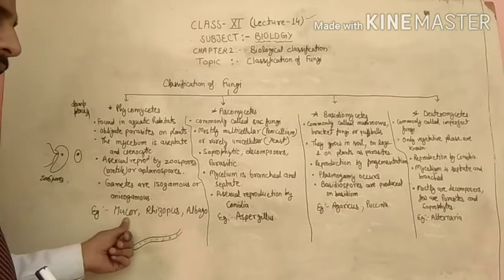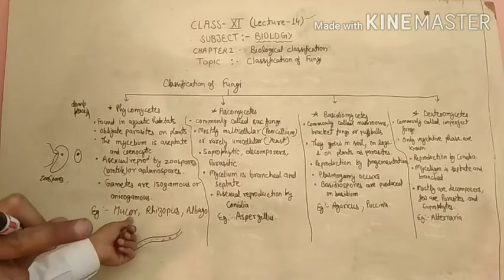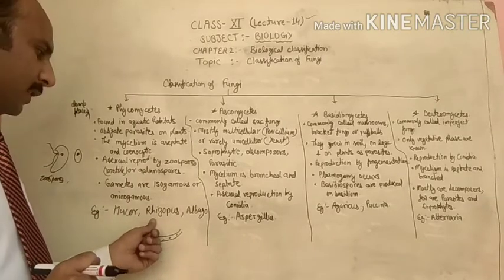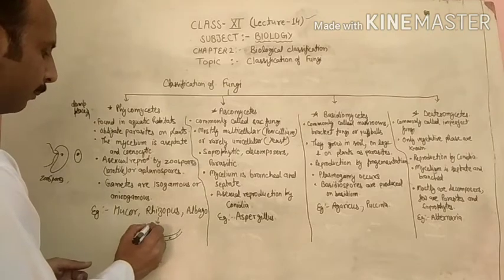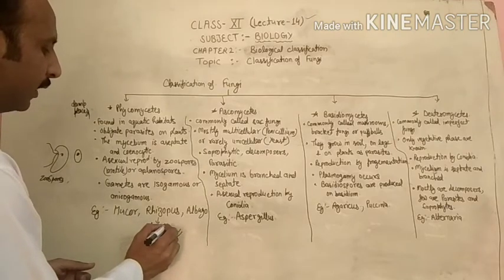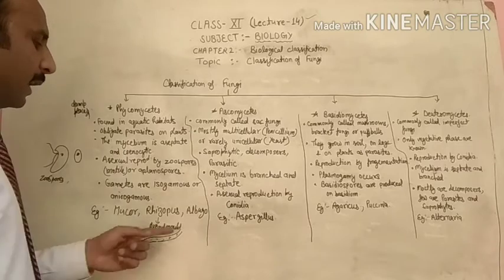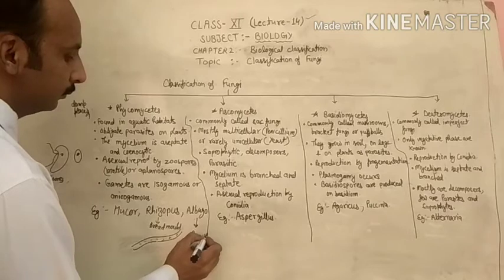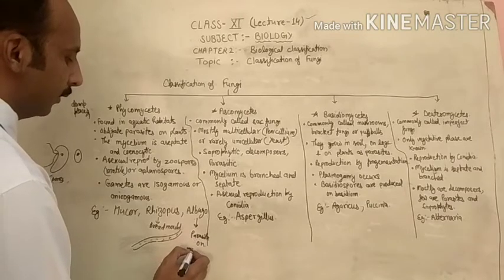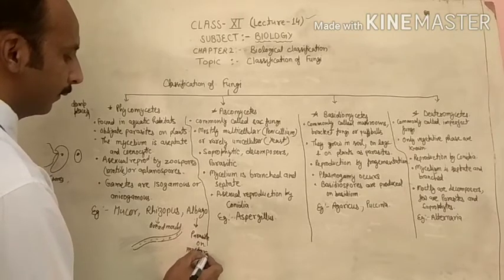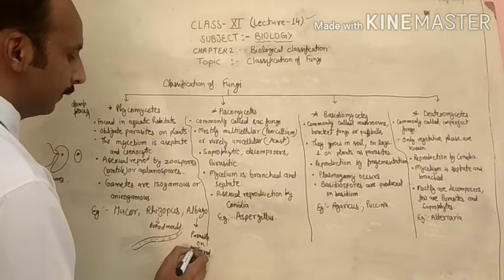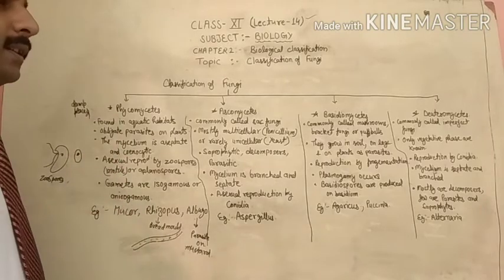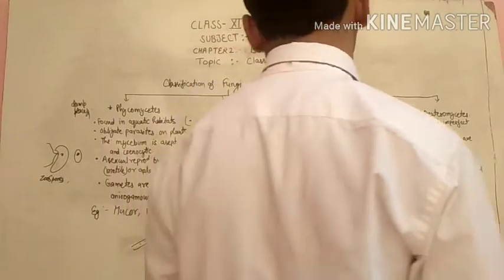The examples of Phycomycetes are Mucor, a fungus which develops on pickles; Rhizopus, called bread mold fungus because it mostly develops on bread and boiled rice; and Albugo, which is a parasite on mustard. These were the main points of Phycomycetes.